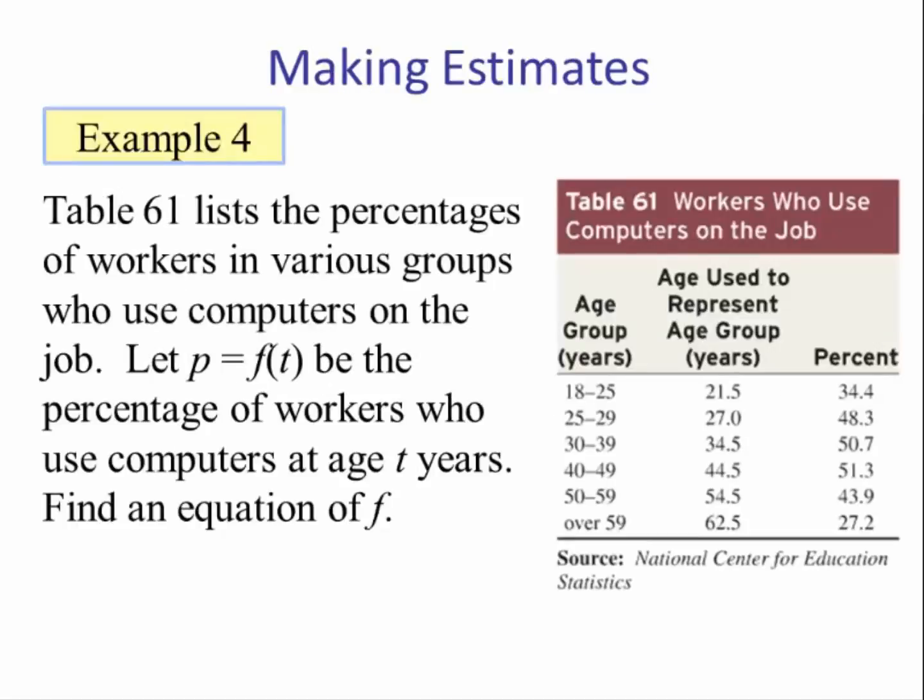Example 4. Table 61 lists the percentages of workers in various groups who use computers on the job. Let p equal f of t be the percentage of workers who use a computer at age t years. Find an equation of f.